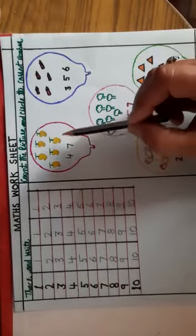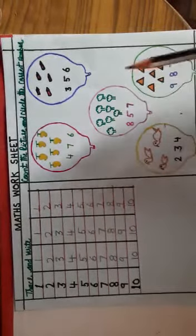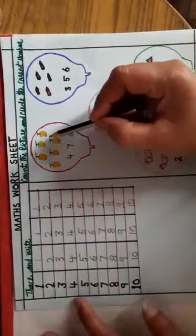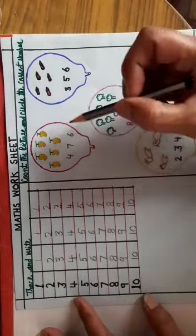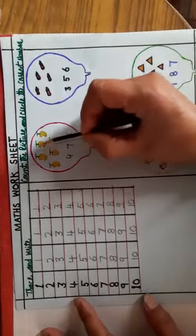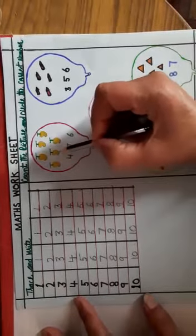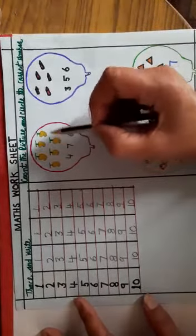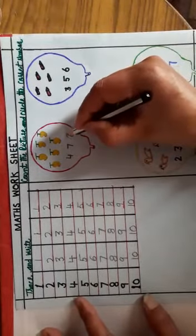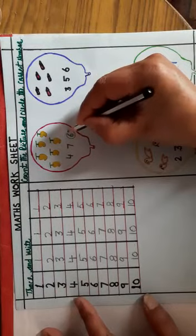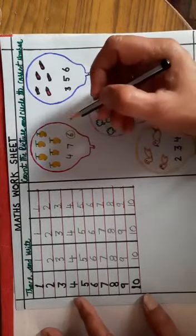So what is this? These are mangoes. How many mangoes are here? Now count it. 1, 2, 3, 4, 5, 6. These are 6 mangoes. So where is number 6? Yes. This is number 6. Number is circle.